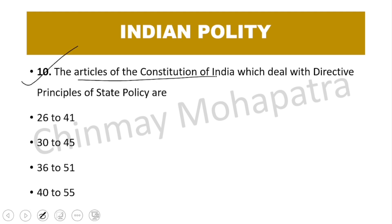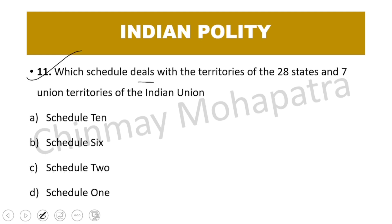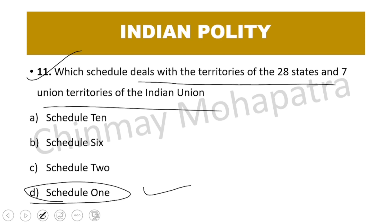Question 10: The articles of the constitution of India which deal with the Directive Principles of State Policy are Articles 36 to 51. Question 11: Which part deals with the territories of the 28 states and 7 union territories of the Indian Union? The right answer is Schedule 1.